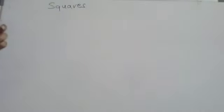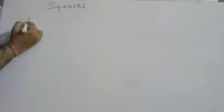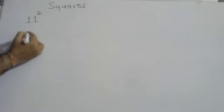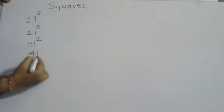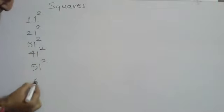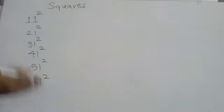We are going to discuss squares today. Today's topic is squares. Now we are discussing the numbers which end with one - that is 11 square, 21 square, 31 square, 41 square, 51 square, 61 square, and so on.